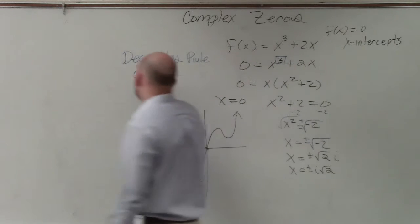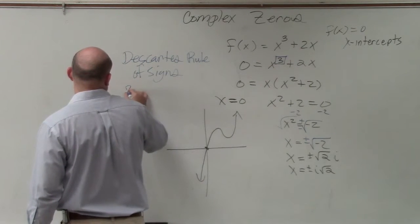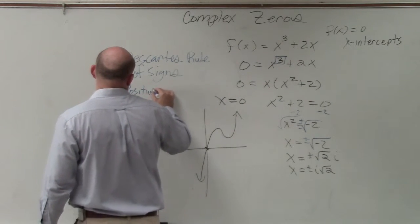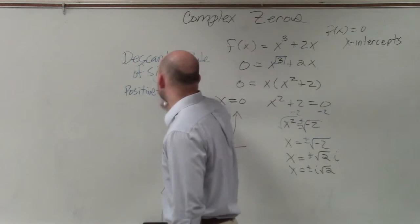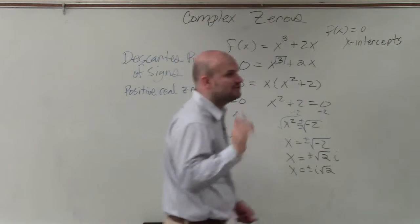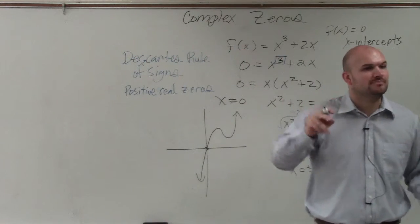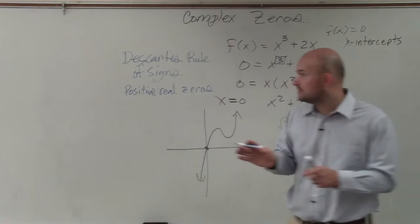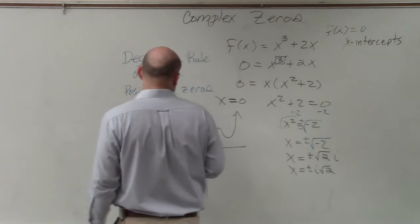So to find the number of positive real zeros is equal to the number of sign changes between each monomial, minus an even number.